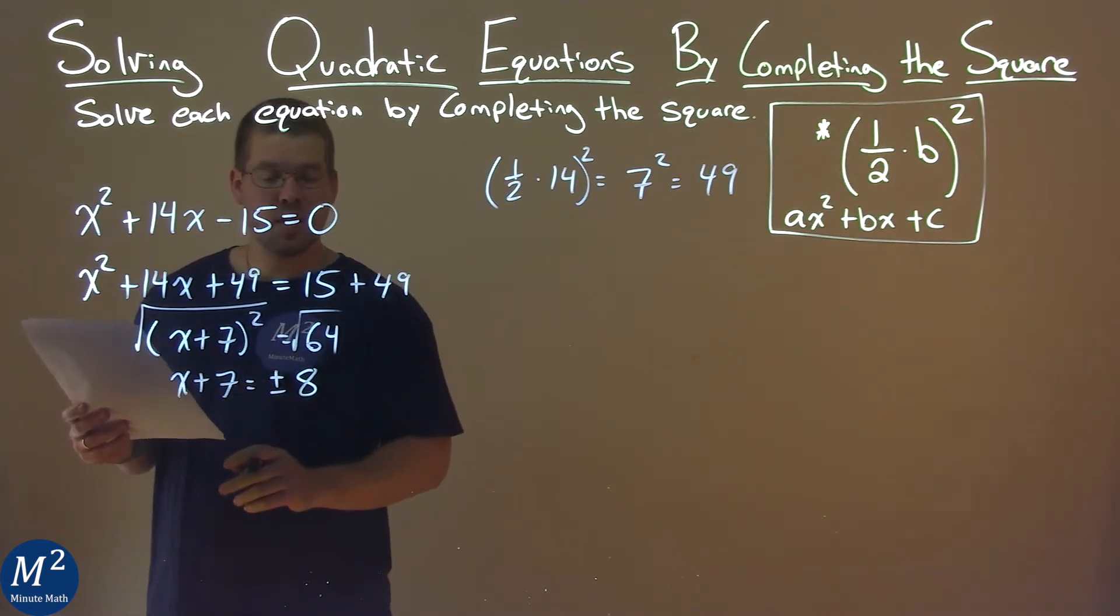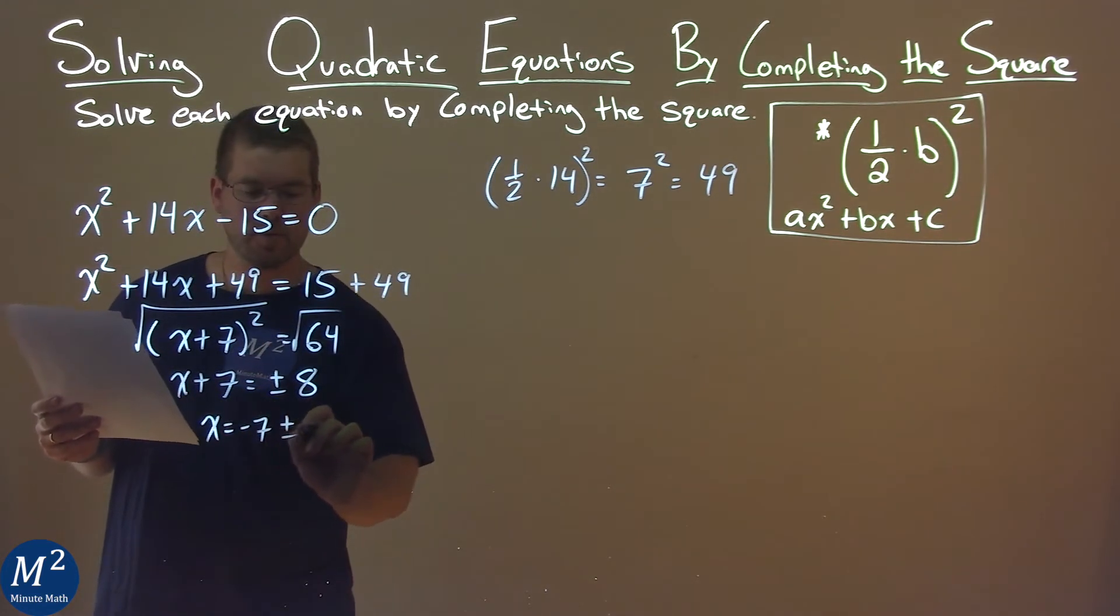We now have to subtract a 7 from both sides, and we have x equals negative 7 plus or minus 8.